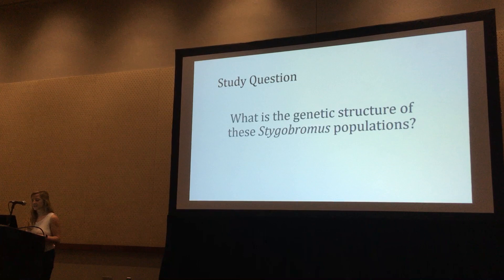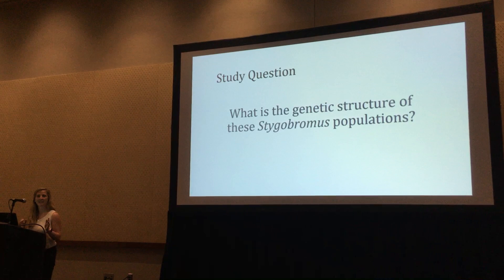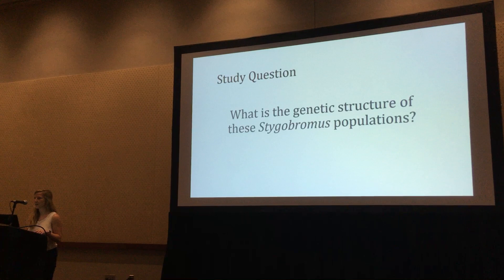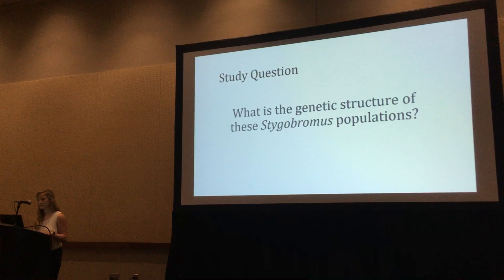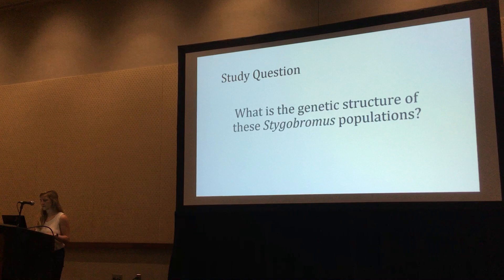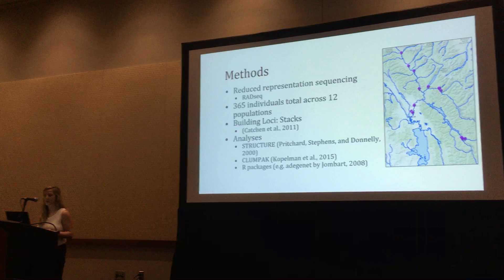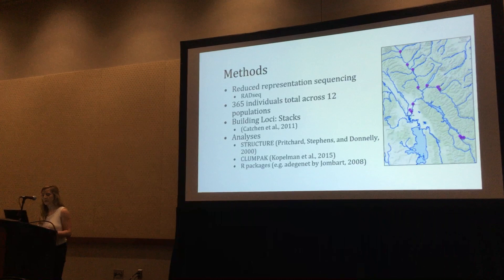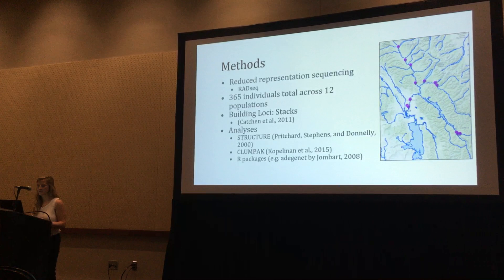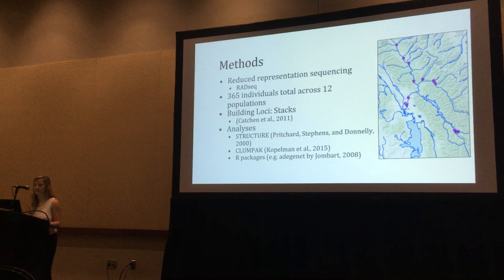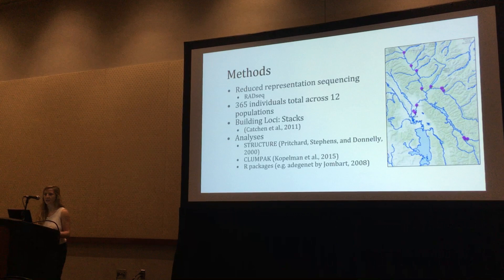Stigobromus is especially interesting if you look into any of the molecular work done in the past 10 years. Cryptic speciation has been found to be pretty common — species that look morphologically similar or identical have actually been found to be entirely different species. To answer this question, we've been using reduced representation sequencing through RAD-Seq, which uses restriction enzymes to cut up the genome. We have 365 individuals total across those 12 populations along the Flathead River, and to build and process the loci after sequencing, I've been using the STACKS program. The first analyses I've run so far have been STRUCTURE, CLUMPP, and some R packages.